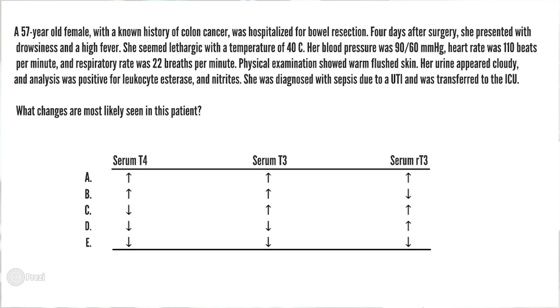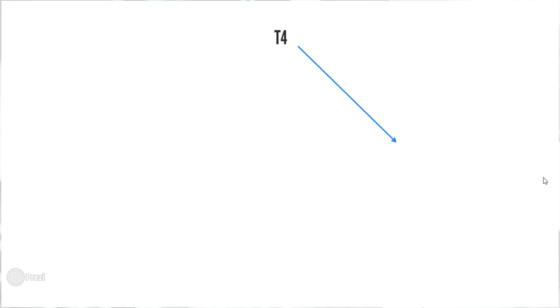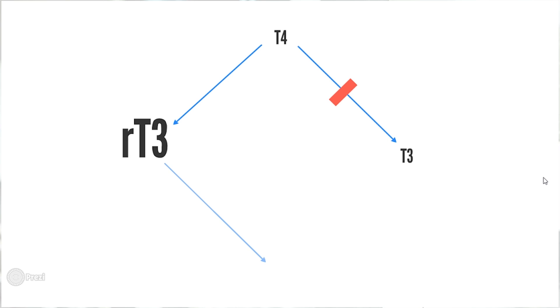Now back to the question — what happens to hormones in euthyroid sick syndrome? Depending on how ill the patient is, the hormones increase or decrease accordingly. The most important initial change is the increase in reverse T3, followed by a decrease in T3 and a decrease in serum T4. It is suggested that reverse T3 is increased not only due to an increase in conversion of T4 to reverse T3 instead of T3, but also a reduced breakdown of reverse T3 to T2, as seen in this diagram. This phenomenon is thought to be protective as it avoids excessive tissue catabolism commonly seen in critically ill patients.